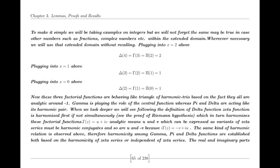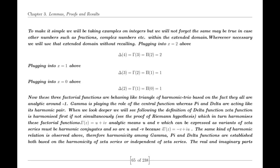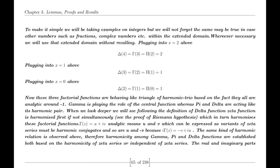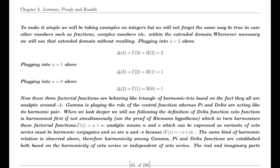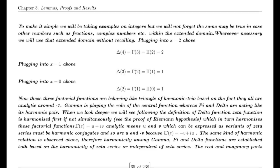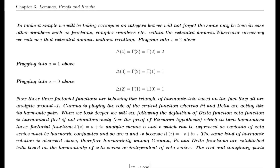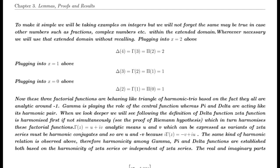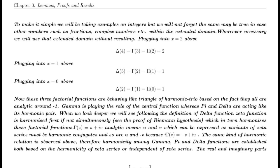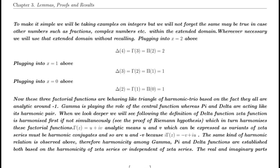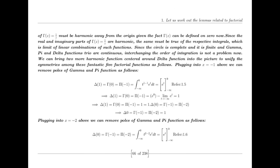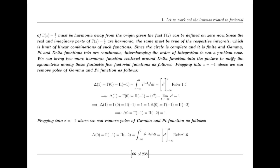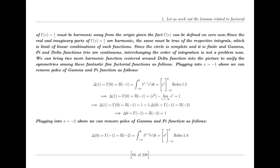Some may question the unification of the zeta function with Euler's zeta function, seeing them as distinct entities. Yet, in complex analysis, the concept of harmonic conjugates is well established. By positioning these functions as harmonic conjugates, I've created a framework that unifies their behavior, offering a more comprehensive understanding of their relationship. This unification is not a departure from tradition but an expansion of it, extending the reach of what we know.